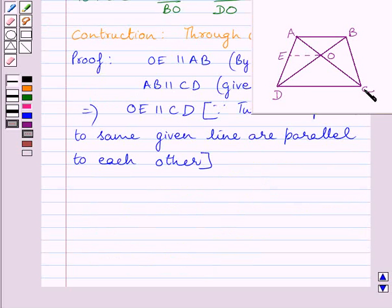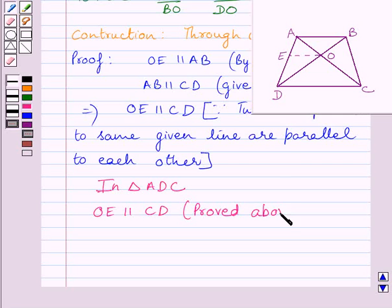Now, let us consider triangle ADC. In triangle ADC, OE is parallel to CD. This we have shown above. Now, by basic proportionality theorem we get AE upon ED is equal to AO upon OC.